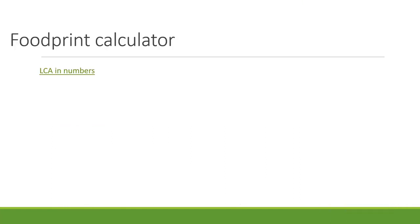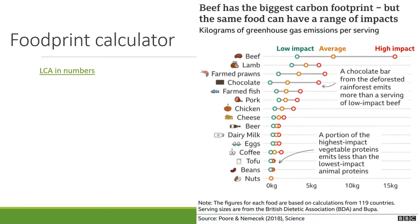Some examples of footprint calculators are given via links, where life cycle assessment is expressed in numerical form. As with the CO2 footprint example seen earlier, here we look at the food footprint. We are no longer always in the negative section. There is a wide range from low to high impact. Notably, a chocolate bar from a deforested rainforest emits more greenhouse gases than a serving of low-impact beef.